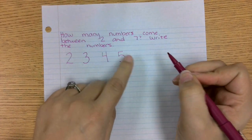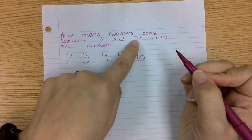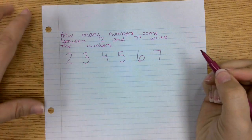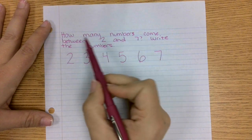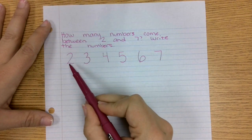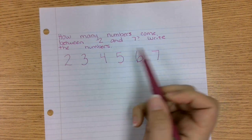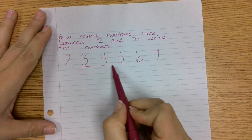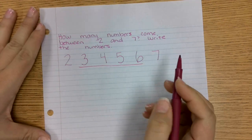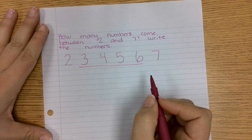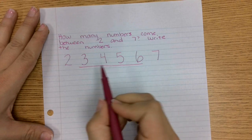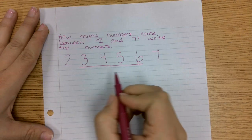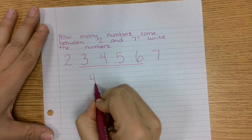And then we have the number six, and the last number is the number seven. So the problem says how many numbers come between, so does that include two and seven? No, it's between the numbers. So let's count to see how many numbers come between two and seven: one, two, three, four. So four numbers come between two and seven, and those numbers are three, four, five, and six. Great job, boys and girls.